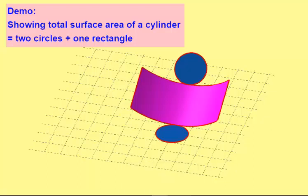This video demonstrates the concept that the total surface area of a cylinder equals two circles and one rectangle.